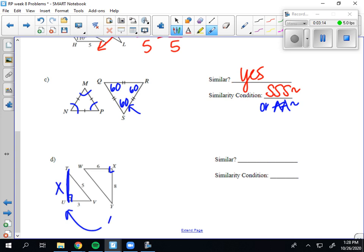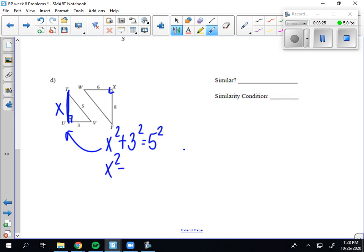So if I do that as x, x squared plus 3 squared equals 5 squared. So that would be x squared plus 9 equals 25. Take away 9 from both sides, x squared equals 16. So then I take the square root. So x equals 4.